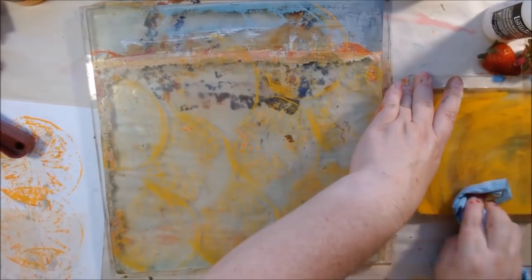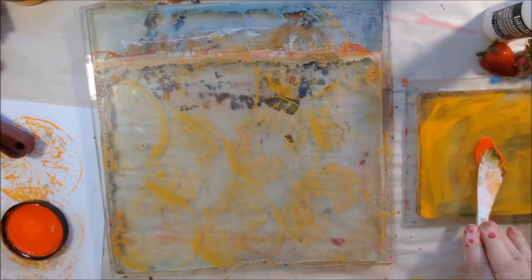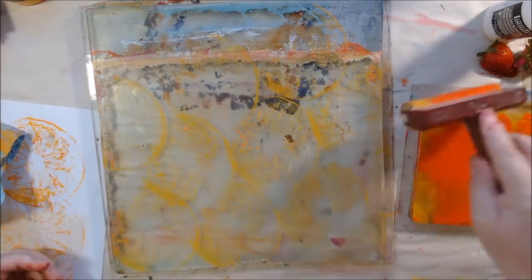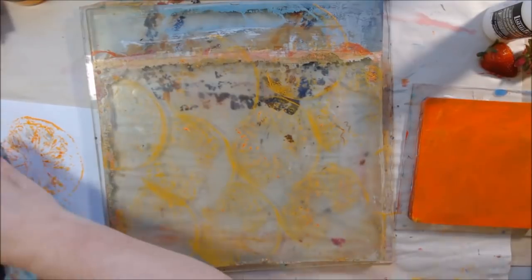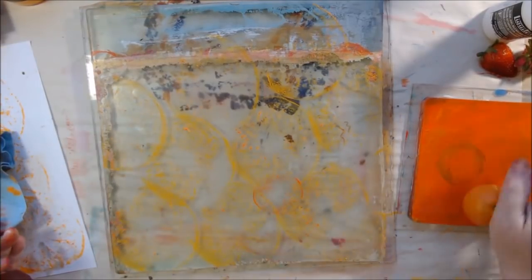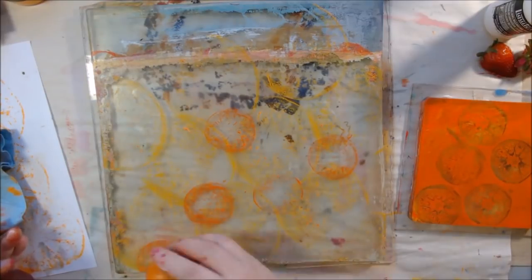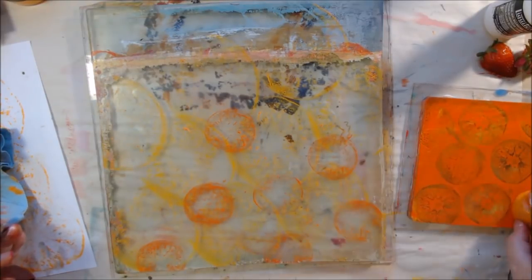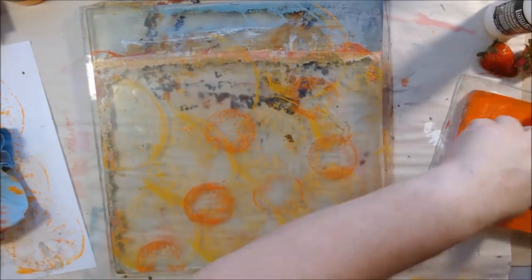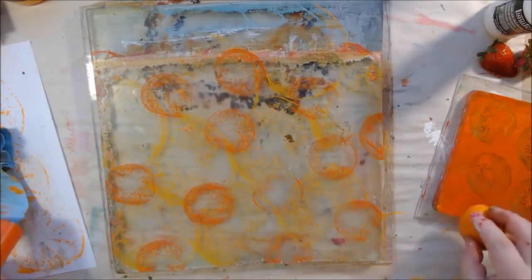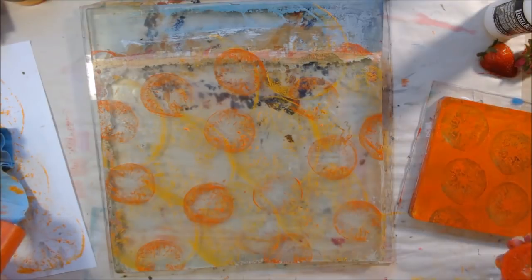Then I'm doing the same thing that I did with the celery stem, putting paint on my six by six and using it as a sort of ink pad to stamp with, this time with my citrus fruit. And I used Pure Sunshine which is a yellowish orangish color, and then this Tangerine Dream which I thought was so appropriate considering I was using a tangerine.